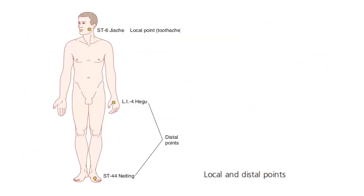Here we have an illustration of local and distal points. The patient having a toothache is using Stomach 6 as a local point, and the distal points are LI4 and Stomach 44.